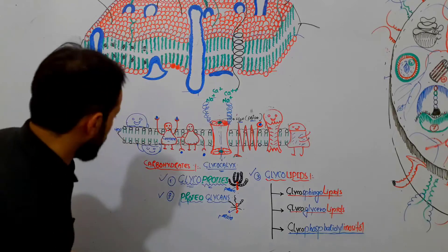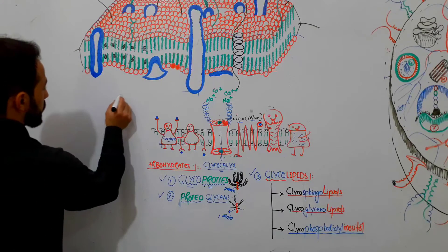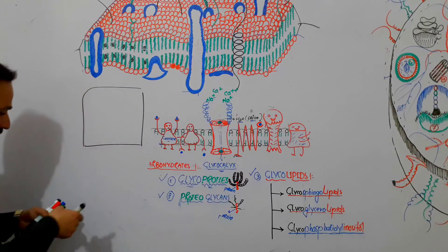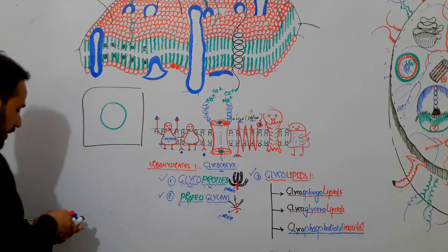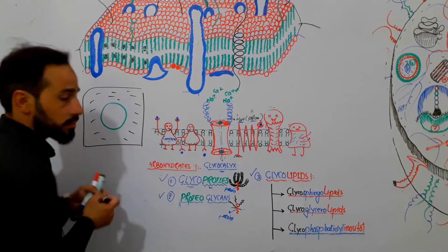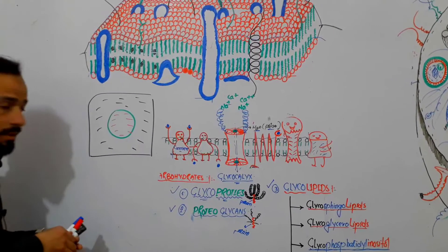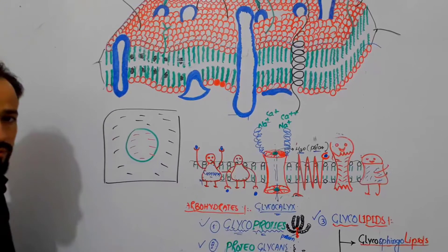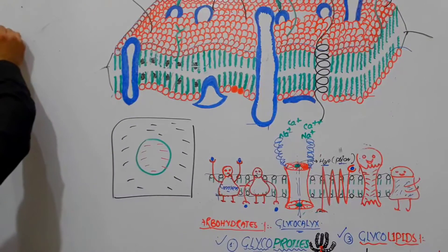Here we have a tissue, and in this tissue we have a cell. External to the cell we have the extracellular fluids, and inside the cell we have the intracellular fluids — this is the cytoplasm. The cell membrane is a barrier between the extracellular fluid and intracellular fluid. So the first and most important function of the cell membrane — let me write here: Functions of Cell Membrane.